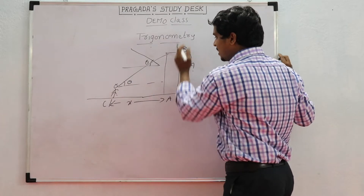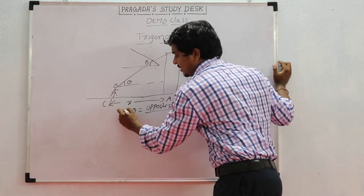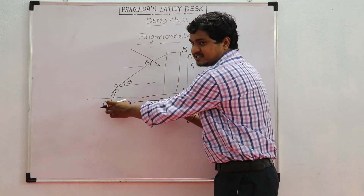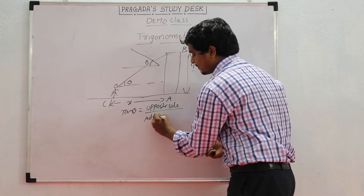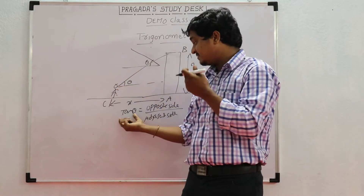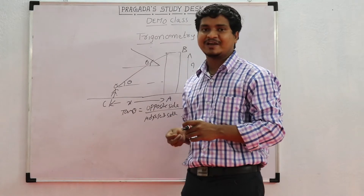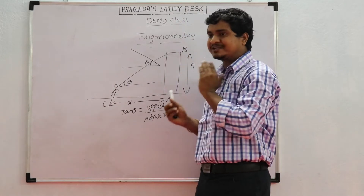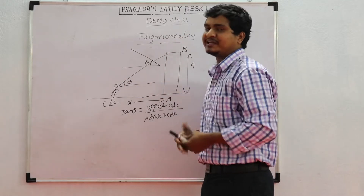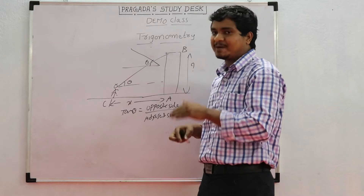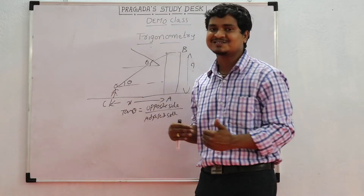From the angle theta and the known distance, we can measure the height of the building. We don't know the opposite side but we know the adjacent side and the angle, so we apply tan theta. Tan theta equals opposite side divided by adjacent side. If theta is 30 or 45 degrees, we can use the standard trigonometry table values to get the height. The same approach applies to measuring mountain heights — knowing the angle and the distance from the foot of the mountain, we can find the height.